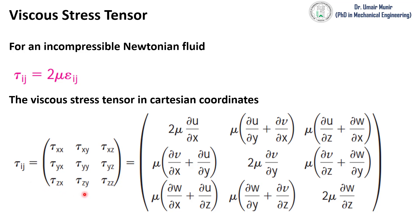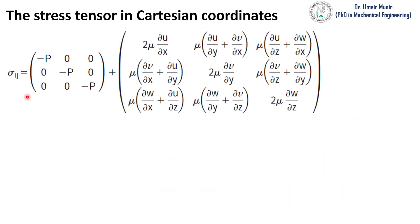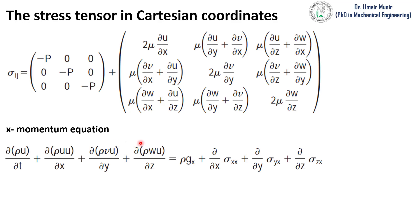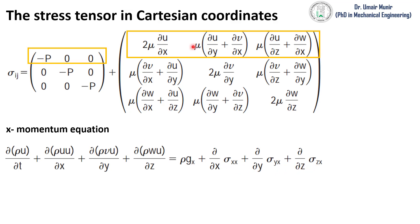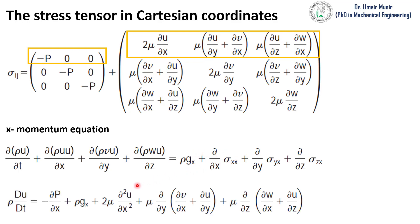This viscous stress tensor can be written in the form of Cartesian coordinates in this way. So we can write the stress tensor in the form of pressure and viscous stresses. We have the x-momentum equation. Now we will replace these stresses with pressure and viscous terms. We will use the x terms of this stress tensor and substitute these values into this x-momentum equation. After substitution of the viscous term into this x-momentum equation, we get the momentum equation in this form, where the stresses have been replaced by velocity gradients and viscosity.